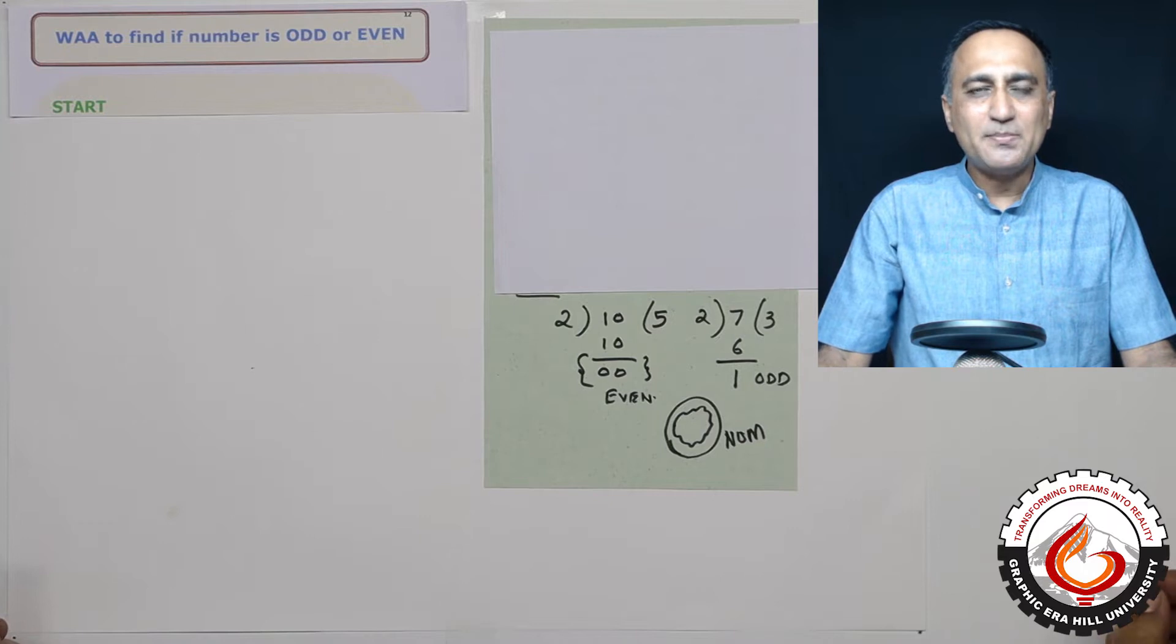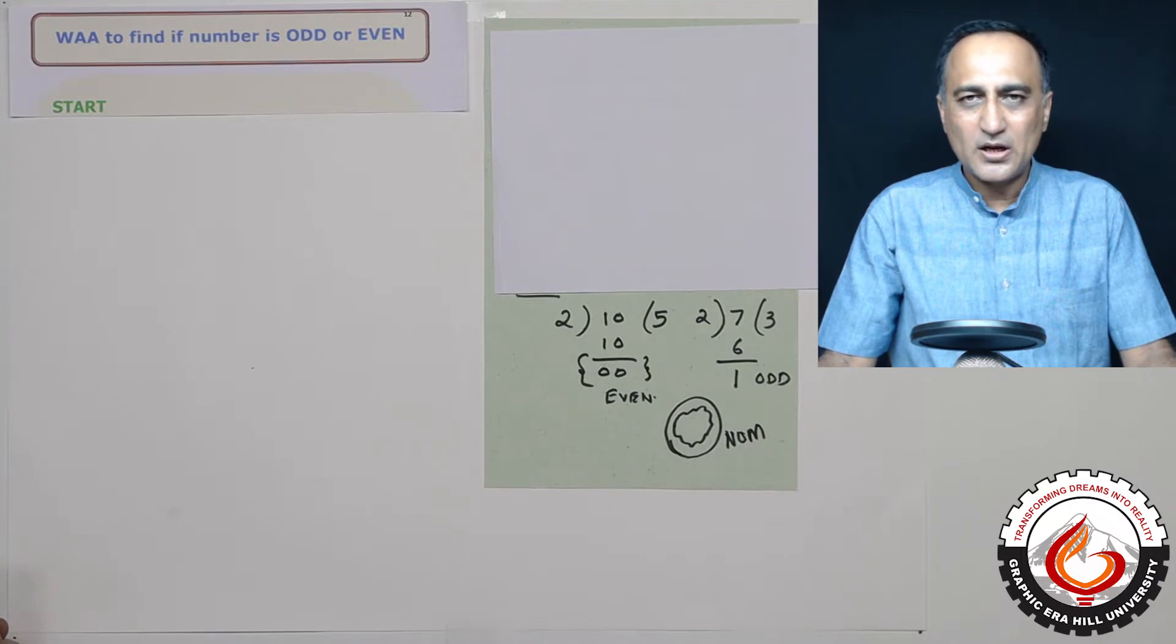We all know that numbers like 1, 3, 5, 7, 9, 11, 13 and so on are referred to as odd numbers.